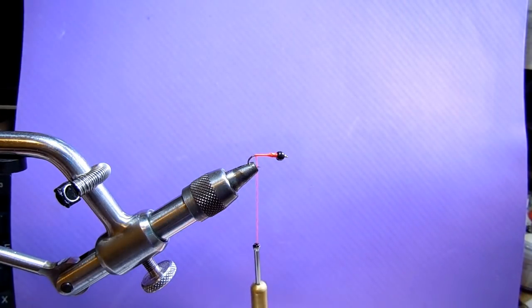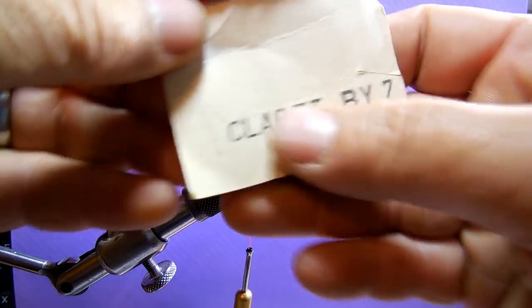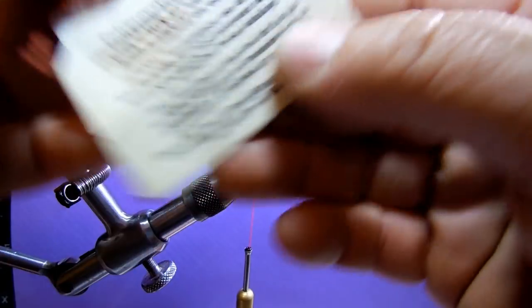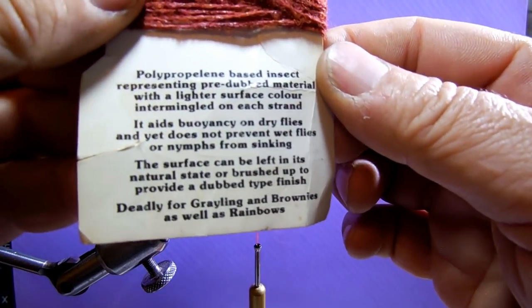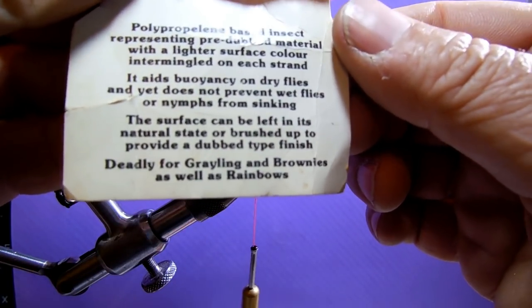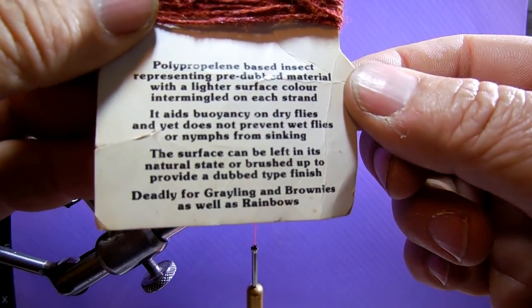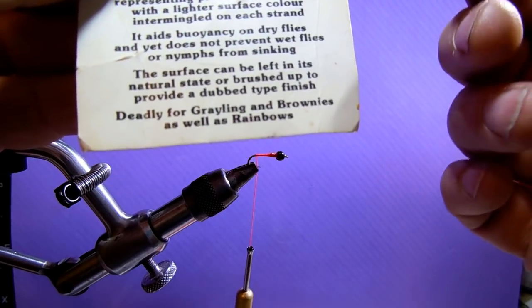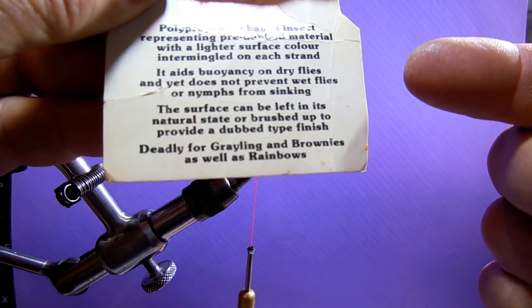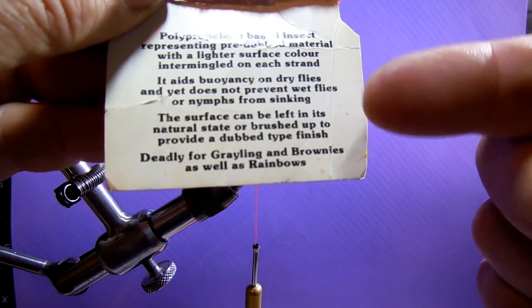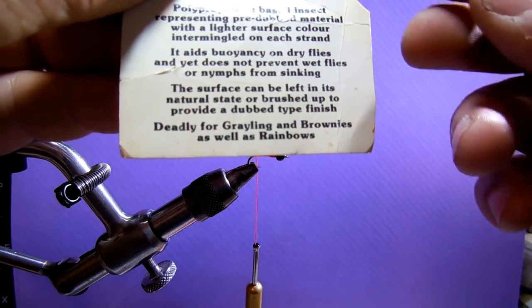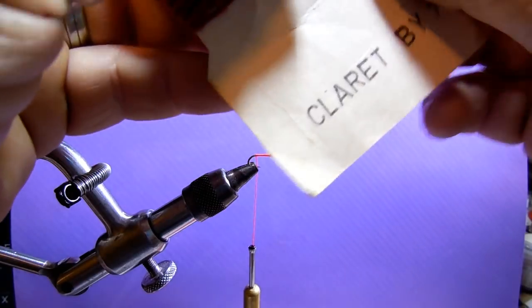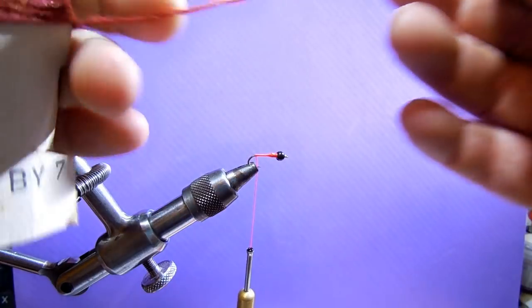Now we're going to get a piece of this stuff. It's polypropylene based insect representing pre-dubbed material with a lighter surface color intermingled on each strand. Now look, it says it aids buoyancy on dry flies but I use it for nymphs, and you can see further down it says that it does not prevent wet flies or nymphs from sinking.